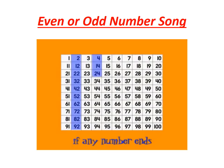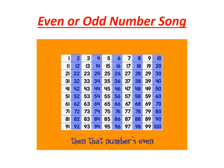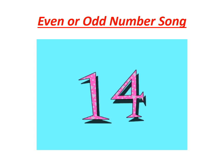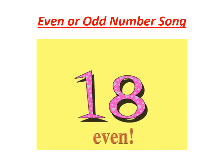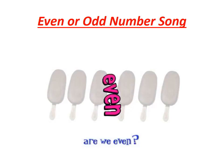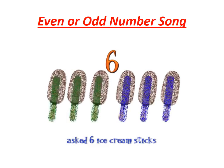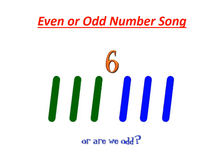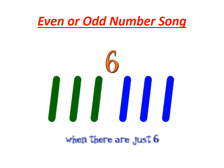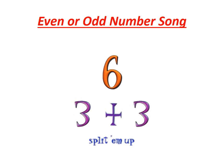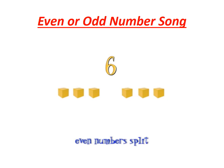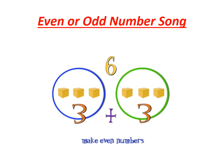Say this rhyme: if any number ends with one of those digits, then that number's even every time. Are we even or are we odd? As six ice cream sticks — are we even or are we odd? Can you split them equally when they're all just six? Yes, you can split them right in half — three and three blue sticks. Even numbers — split them up, even split, down the middle. Even numbers split right down the middle. Half and half make even numbers every time.